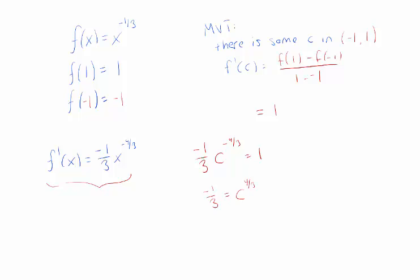Because c to the four thirds is going to be a non-negative number. It can't be negative, because it's the cube root of c raised to the power of four, and anything raised to the power of four won't be negative, so this can never be one third.